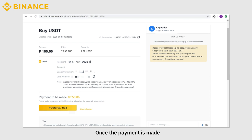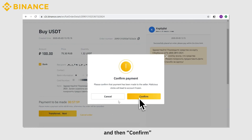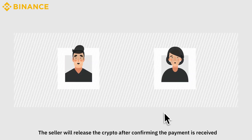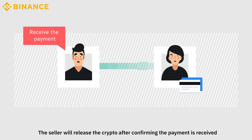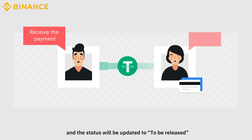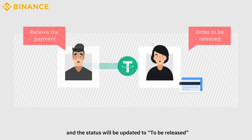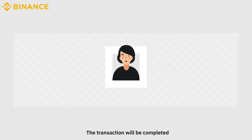Once the payment is made, click on Mark as Paid and then Confirm. The seller will release the crypto after confirming the payment is received, and the status will be updated to To Be Released. The transaction will then be completed.